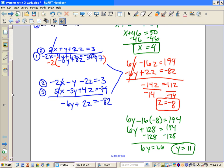So it looks like the solution is 4 for x, 11 for y, negative 8 for z. So we do x, y, and z, always in alphabetical order.